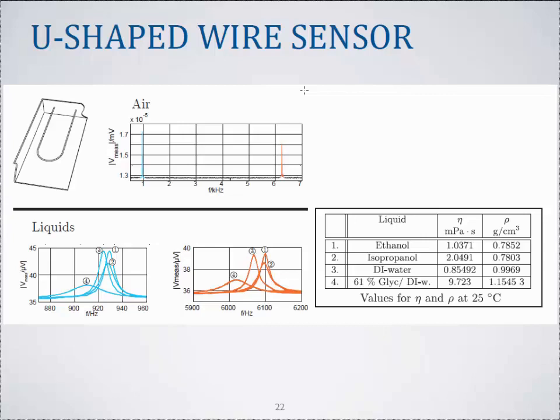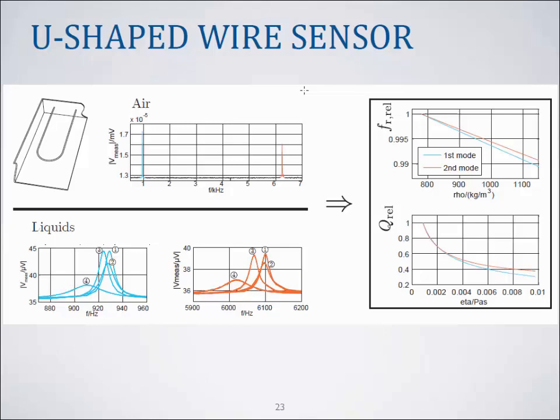Here we see the measurements in liquids. We use the same liquids as for the tuning fork. For this sensor it turns out that the second mode is slightly less sensitive for both mass density and viscosity.